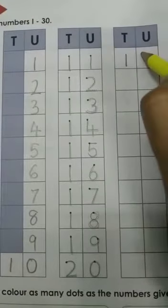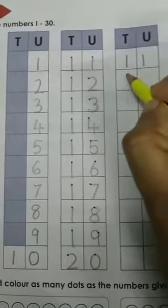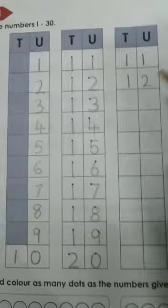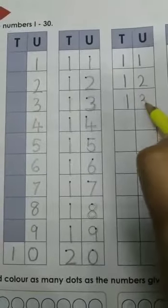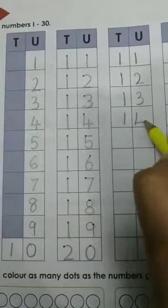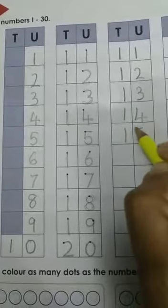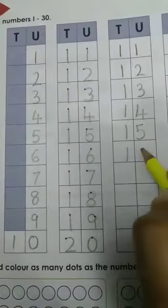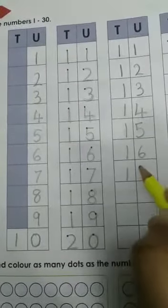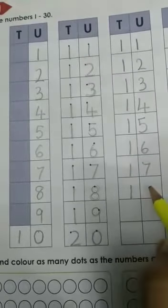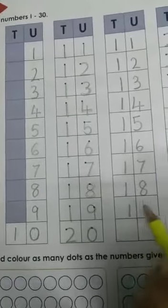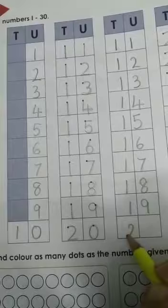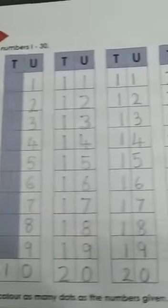11, 1 in the tens place, 1 in the units place. 12, 1, 2. 12, 1, 3. 13, 1, 4. 14, 1, 5. 15, 1, 6. 16, 1, 7. 17, 1, 8. 18, 1, 9. 19 and 2, 0, 20.